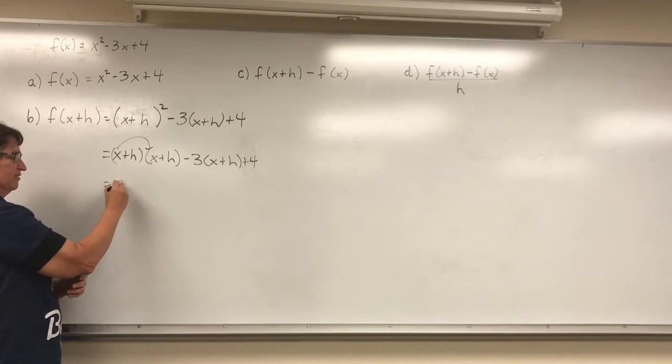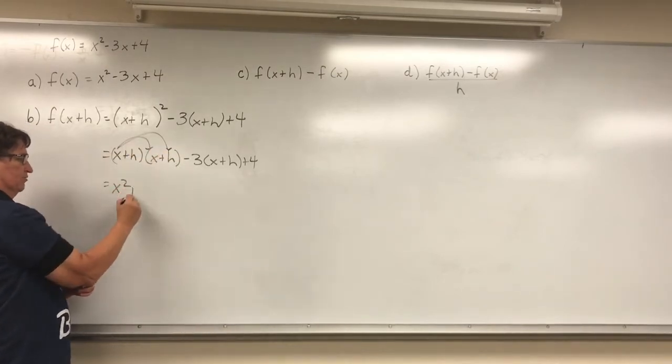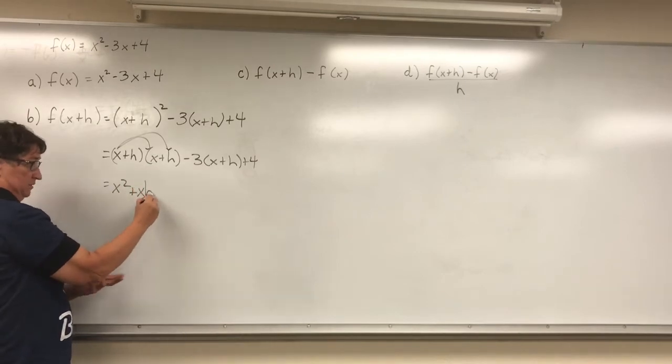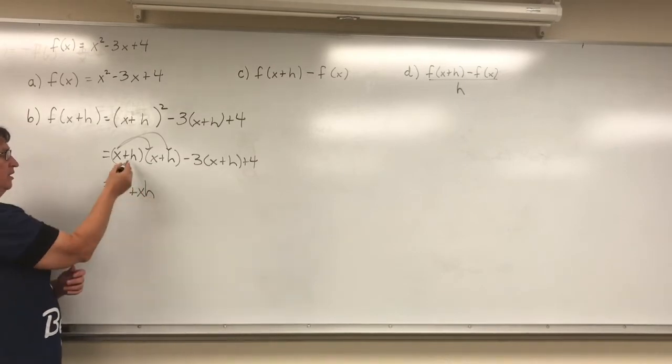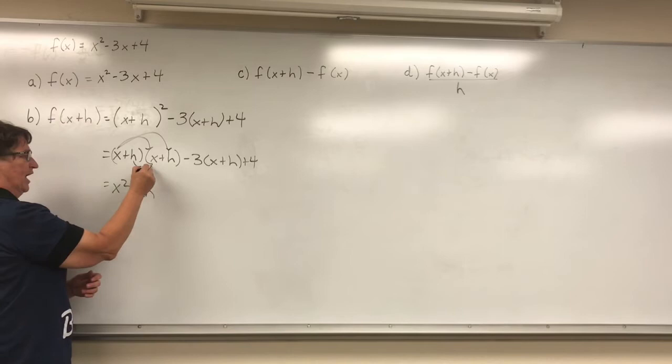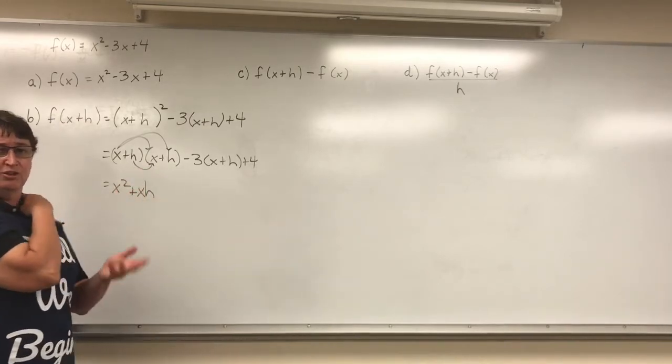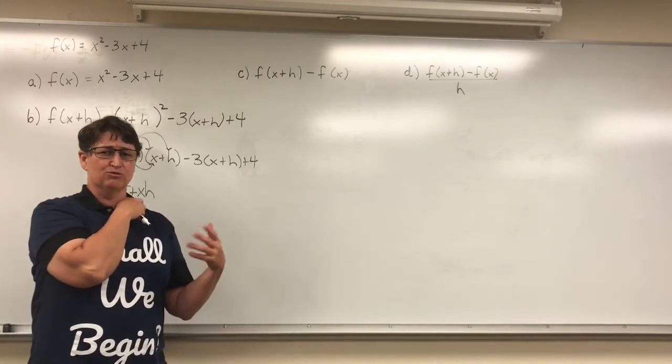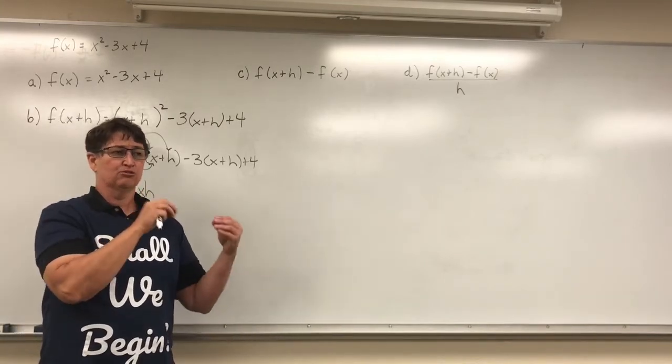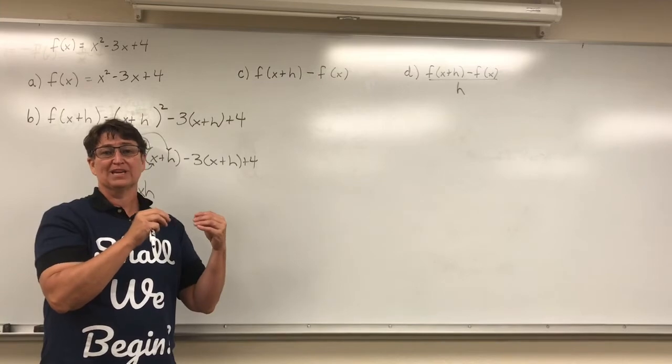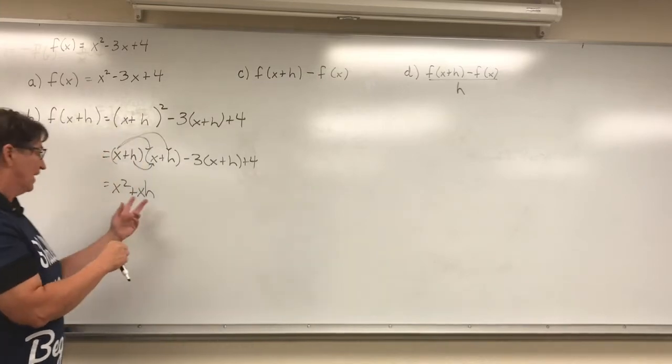Here I'm going to go ahead and distribute that out so that I have x times x gives me x squared, x times h gives me that xh. Now I'm going to distribute the h so that I have x times h or h times x. You know with multiplication, 3 times 4 is equal to 4 times 3. Multiplication is commutative.